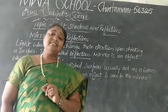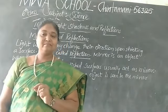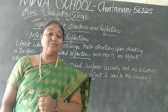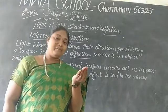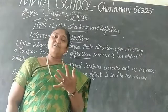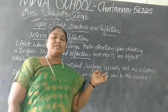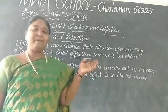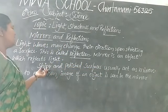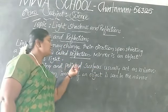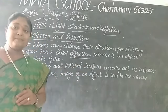Can you guess any other object that reflects light? Water, children. If you look through the water, we can see our image also. So we take mirror and water as examples, because shiny and polished surfaces usually act as mirrors.